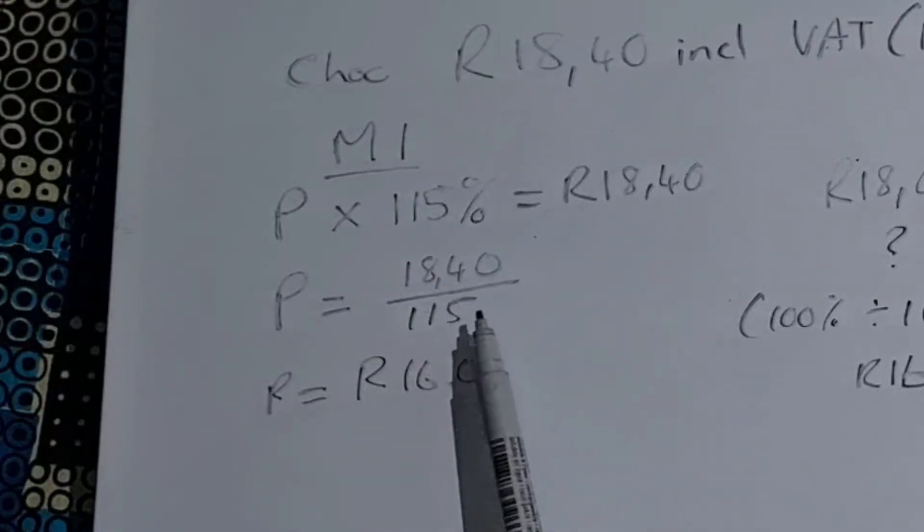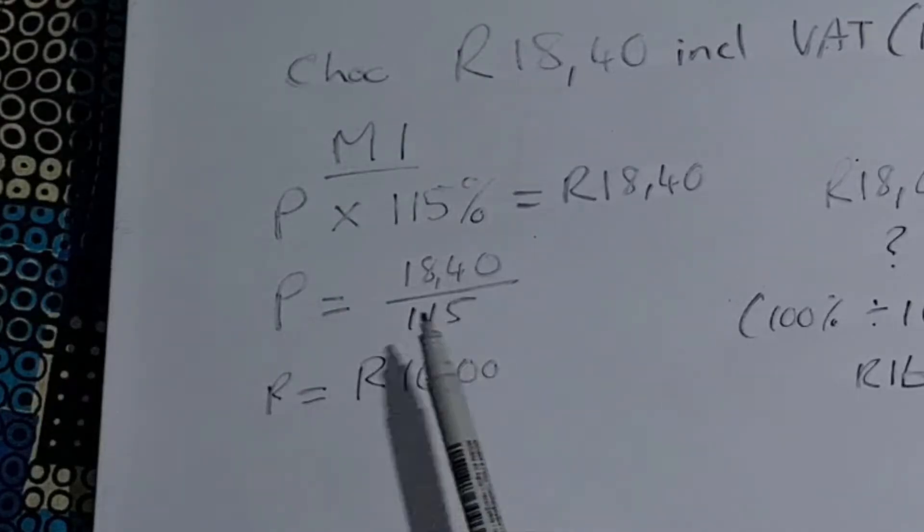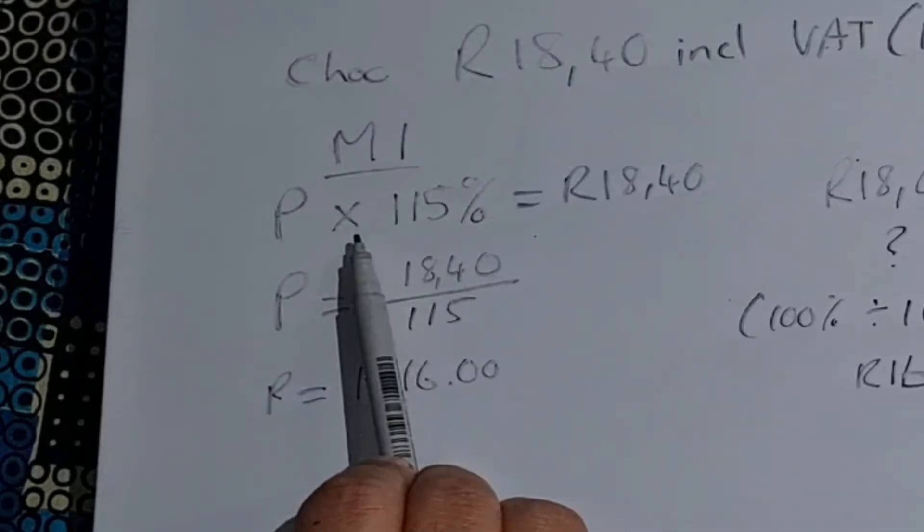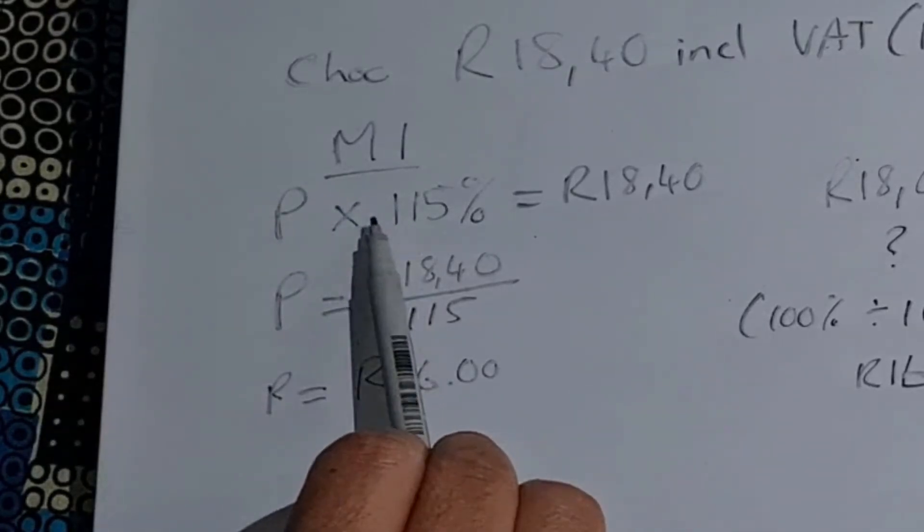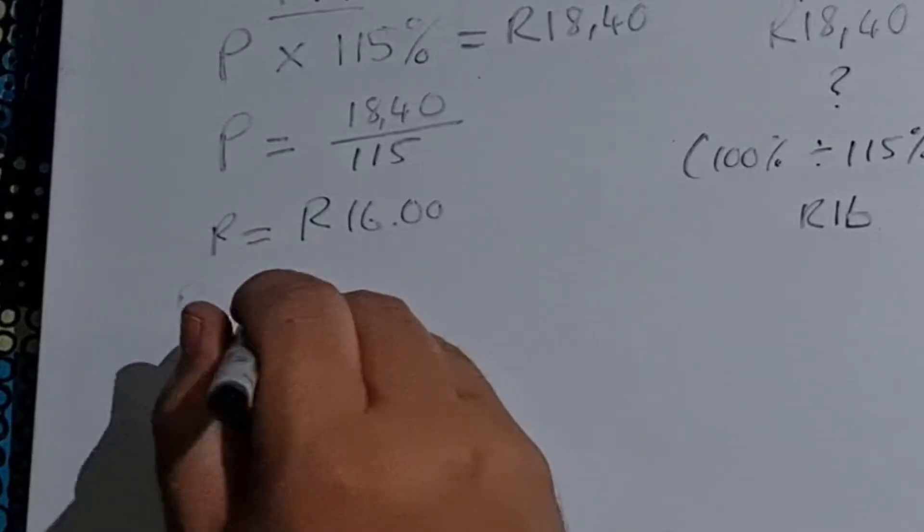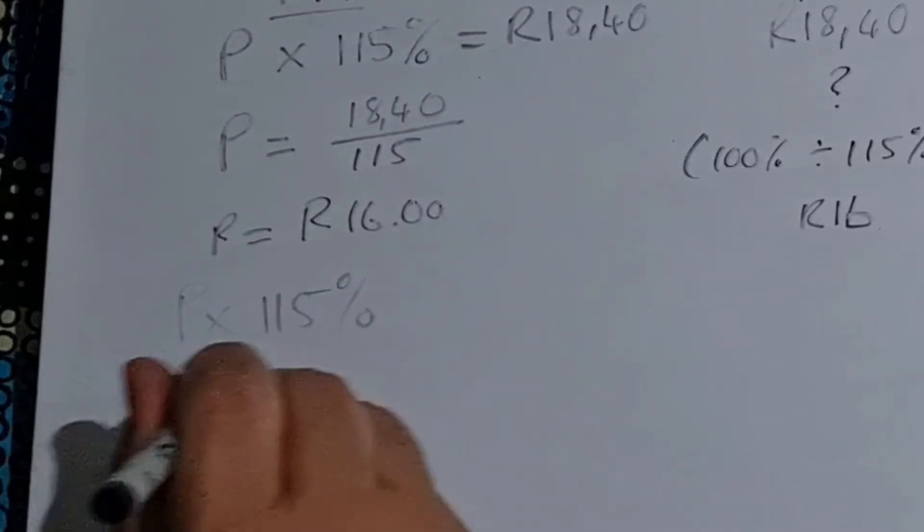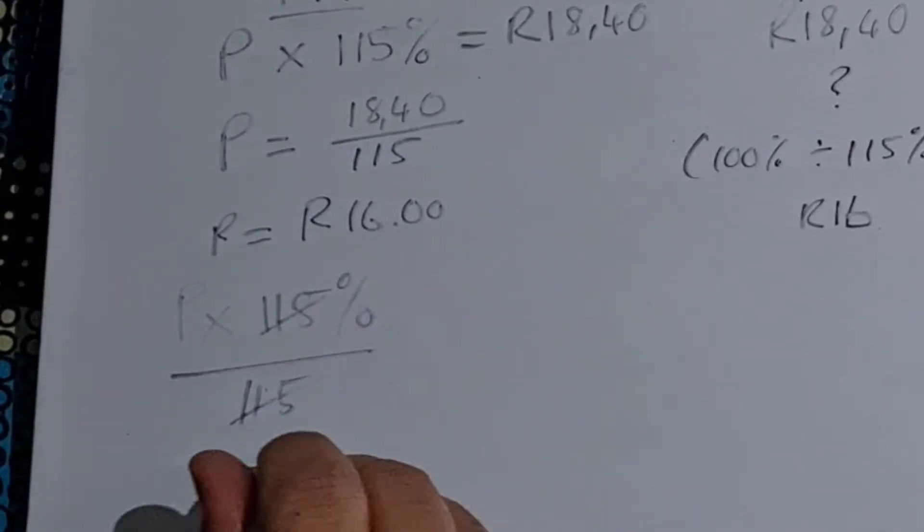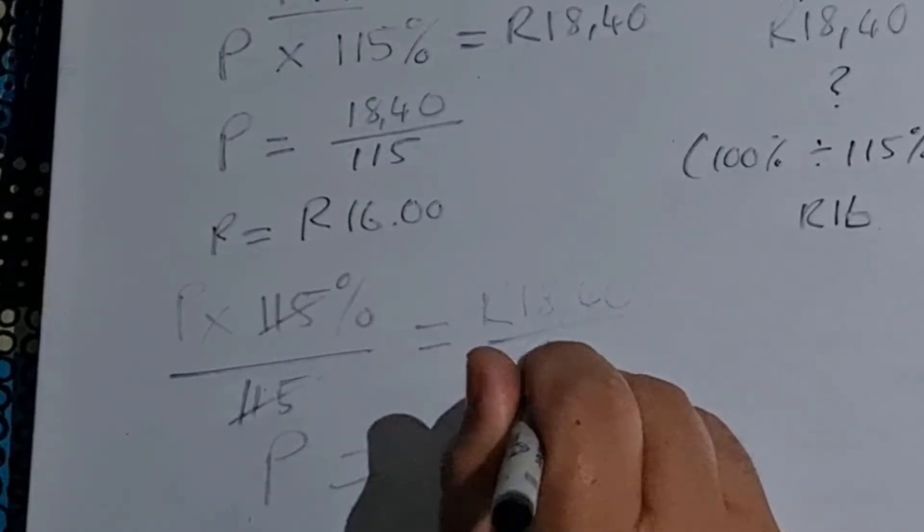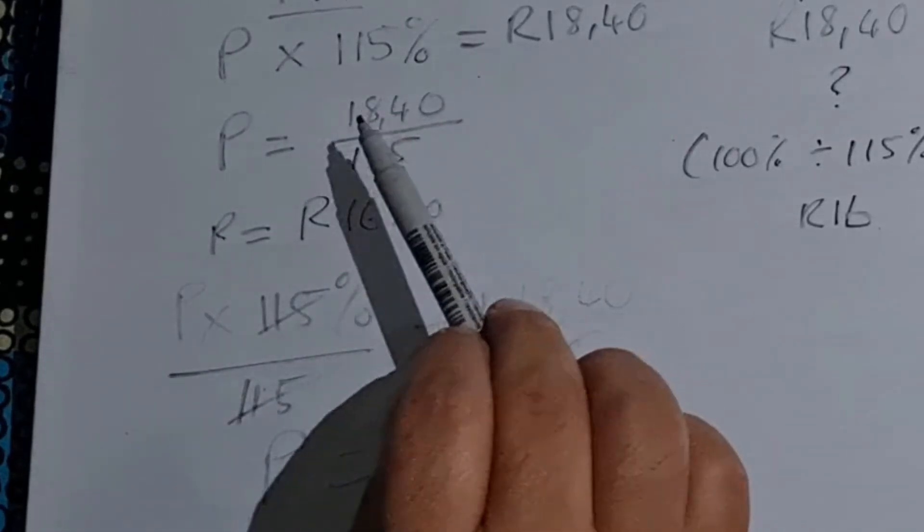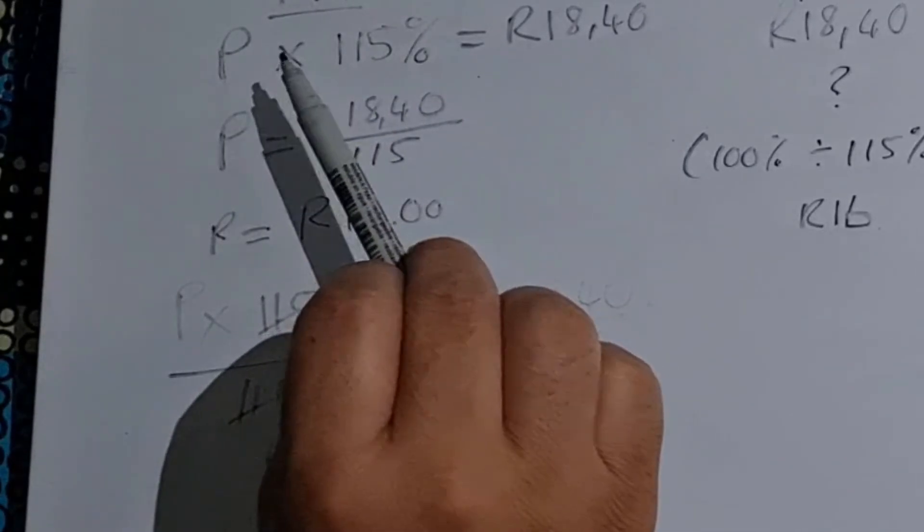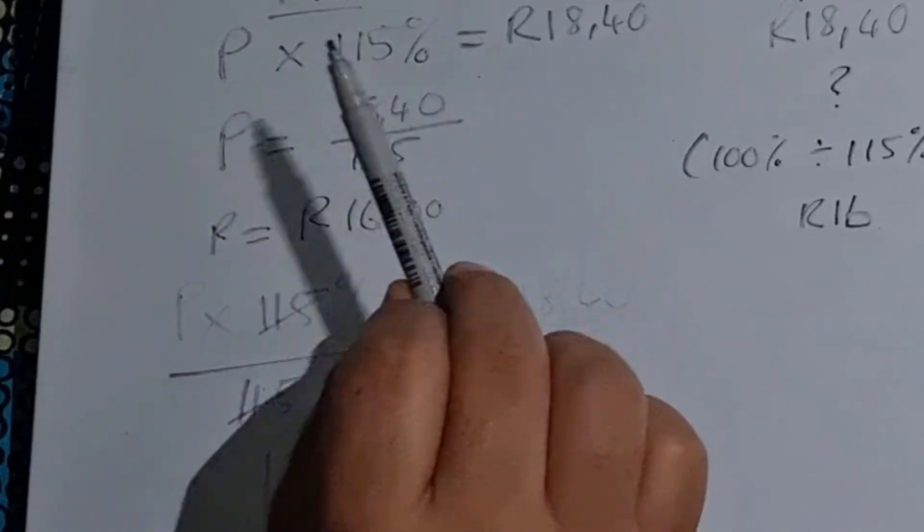Please just remember in method number one, the reason why I'm dividing by 115 is because in order for me to move this 115 over to the other side, I have to divide the side by 115, which means what I do to the one side I have to do to the other. So when I divide this side, if I do P times 115% and divide that by 115, that cancels out. I'm left with P, and then on this side with my R18.40 I've got to divide that by 115, and that is how I then get to that.